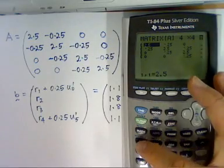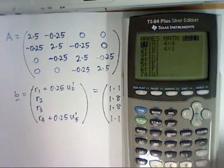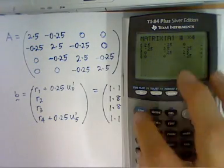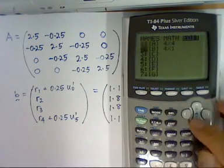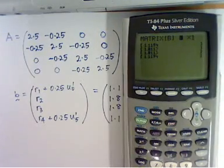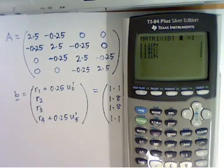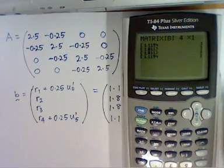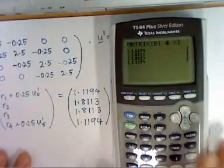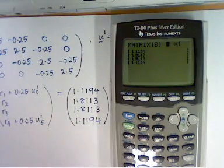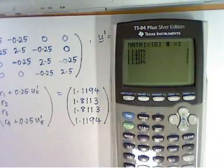Let's go back to the previous screen. And again, you choose edit to define. Let me go back. Choose edit and define my column vector B. Column vector B, I have already defined it earlier on. It's a 4 by 1 with those entries. 1.1194, 1.8113, 1.8113 and 1.1194 as the 4 entries.